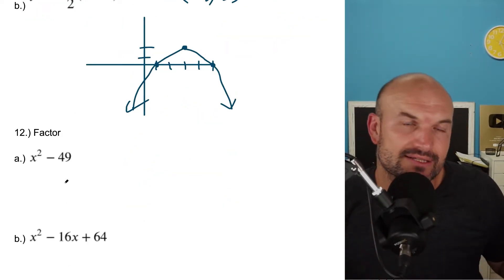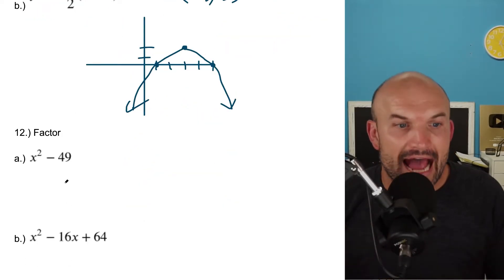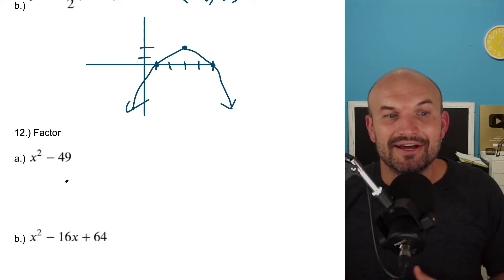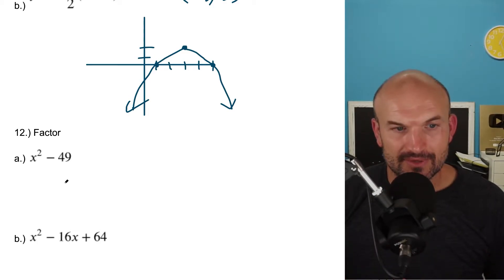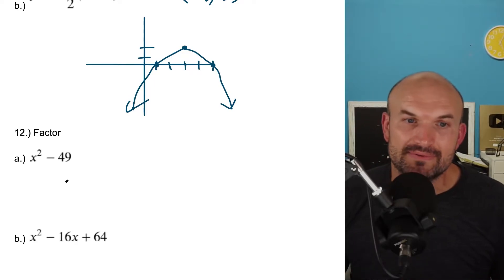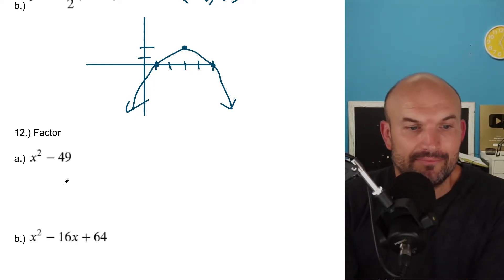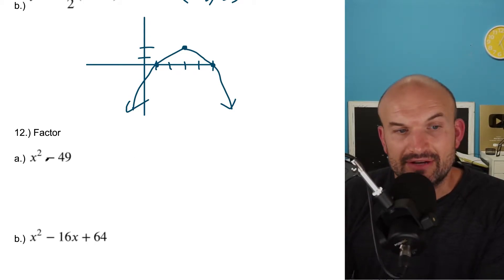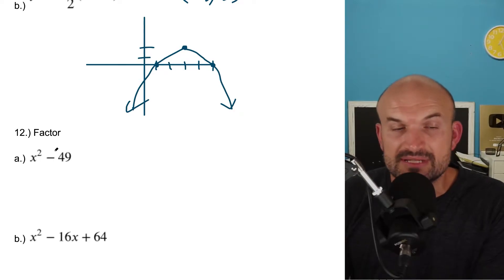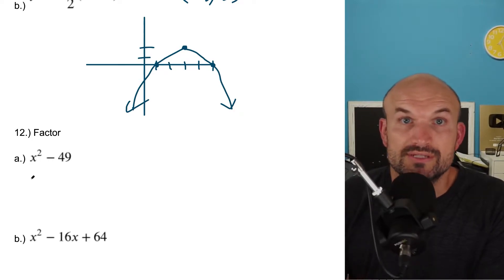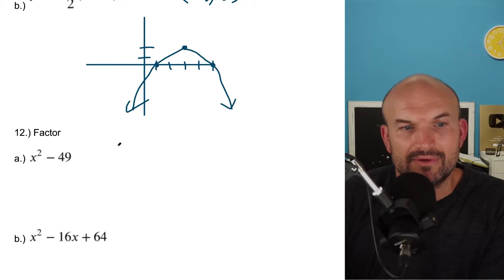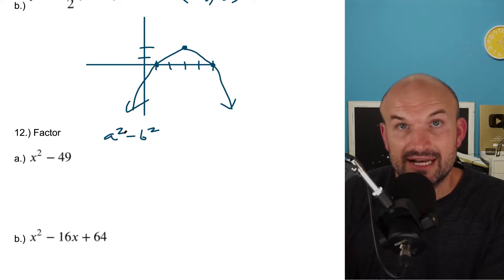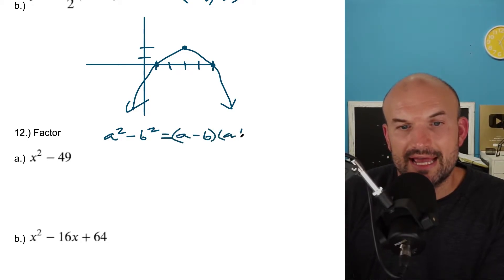Another huge thing you absolutely need to know is factoring — factoring comes up time and time again in pre-calculus. So you're just going to get really good at factoring. One thing to recognize whenever you have a difference of two terms in a quadratic, think about difference of two squares. That relationship is whenever you have the form a squared minus b squared — the first term is squared and the last term is squared, and that's a difference. Remember, that's a minus b times a plus b.